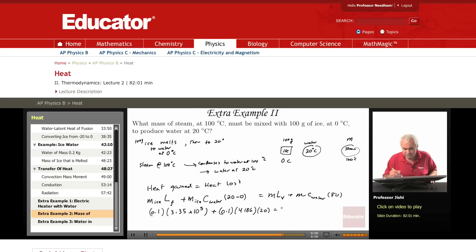It equals the mass of steam, which is our unknown here, times latent heat. It's the same mass of steam, so I'll take it as a common factor. So the latent heat of vaporization is 22.6 times 10 to the 5 joules per kilogram, plus specific heat of water, which is 4,186 times 80.